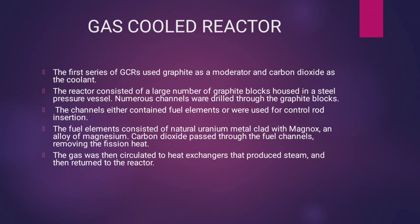The first series of gas cooled reactors used graphite as a moderator and carbon dioxide as a coolant. The reactor consists of a large number of graphite blocks housed in a steel pressure vessel. Numerous channels were drilled through the graphite blocks, which either contained fuel elements or were used for control rod insertion.